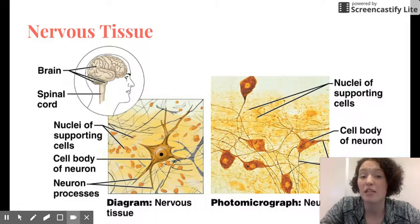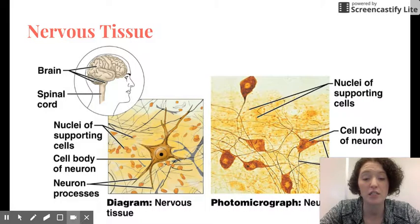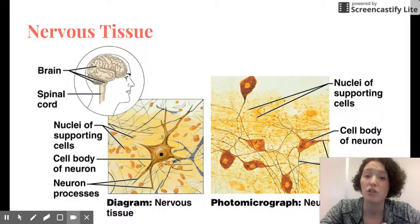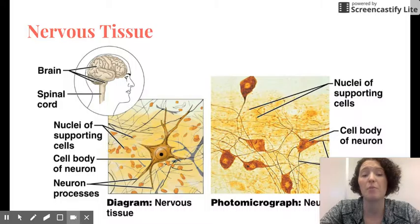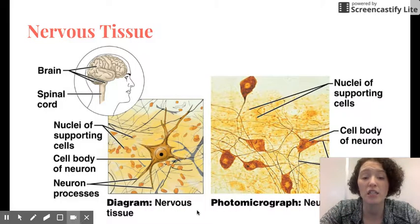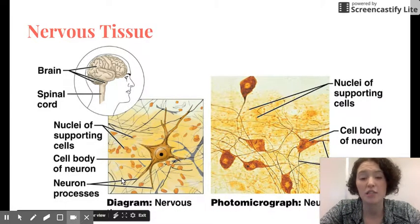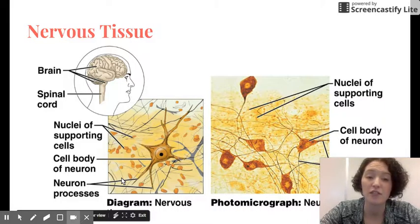While neurons are the main cell that we think of, it's more than just neurons in nervous tissue. For example, there are these other cells called neuroglia, which are supporting cells that help insulate, support, and protect neurons. So there are other cells that the main one is neurons for nervous tissue.